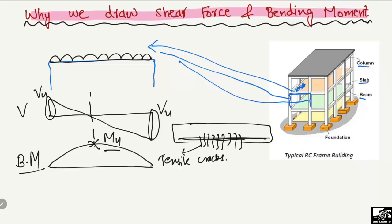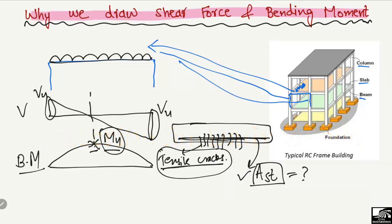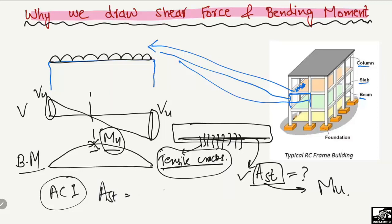These longitudinal bars are placed in the beam to resist the bending stresses. We represent this reinforcement area as Ast. However, we don't know how much area of reinforcement should be provided. According to the ACI codes — and the principle is the same in European codes and Indian standards — we can find the area of steel by: Ast = Mu / (φ × fy × (d − a/2)).